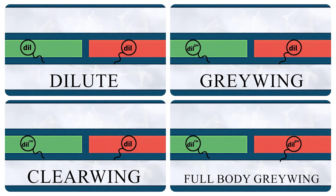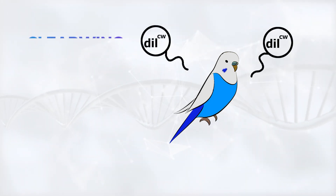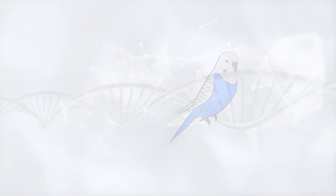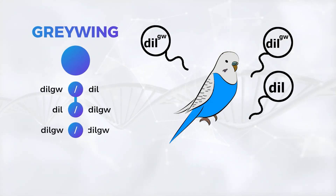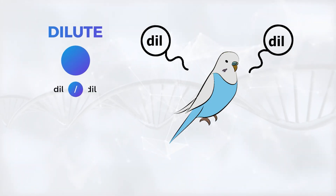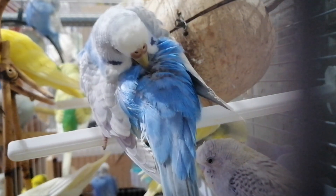To make it easier to understand, think of CW and GW as dominant whenever the normal dominant Dil allele isn't present. So here's how it works: if a budgie has CW/CW or CW/dil, it will be clearwing, since CW is dominant over the recessive dil. If it has GW/GW or GW/dil, it will be graywing, because graywing is also dominant over the recessive form. And of course, if it has dil/dil — both recessive — that's when you get a dilute. So even though they are all part of that same dilution gene, the specific allele combinations are what decides whether the bird turns out clearwing, graywing, or dilute.